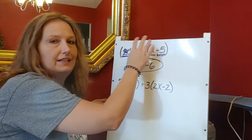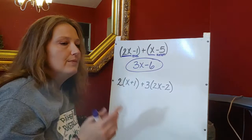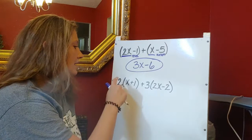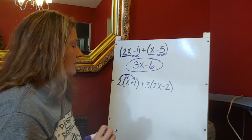So if I add these two expressions together, I get 3x minus six. Now, on some of these you're going to have to do some distribution first, so I've got an example set up here.